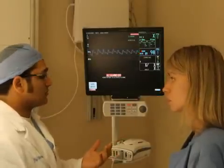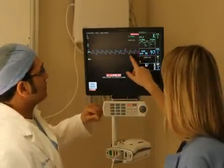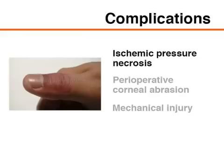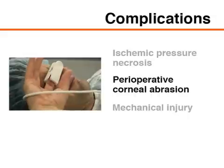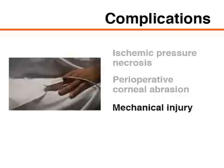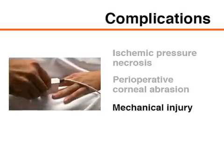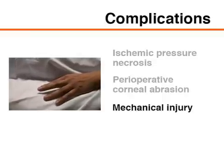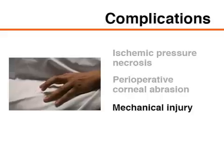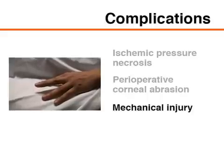Although the pulse oximeter is generally a safe device, its use still carries some risk of adverse events. Ischemic pressure necrosis may result if the probe is placed too tightly on the patient. Perioperative corneal abrasion may occur if a patient with a probe on a finger rubs his or her eyes when awakening from anesthesia. Prolonged placement of a pulse oximeter probe, as may occur in patients in the ICU, may lead to mechanical injury such as finger stiffness, making it difficult to flex the finger after removal of the probe. Although previously documented, these complications remain uncommon.